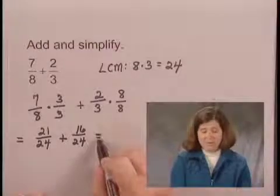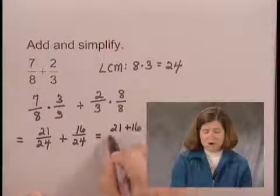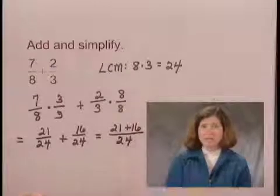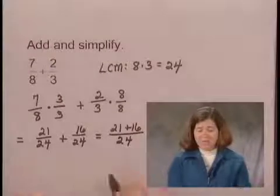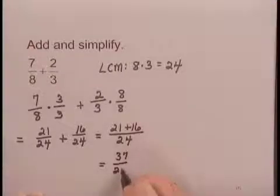21 plus 16 all over that denominator of 24. I keep the common denominator. Adding the numerators, I have 37 over 24.